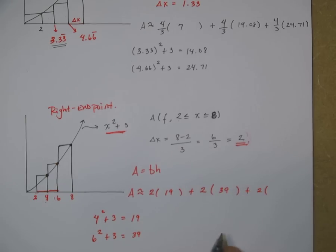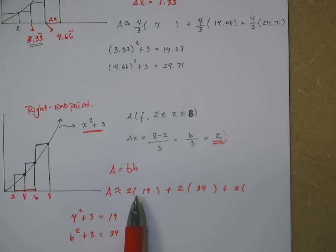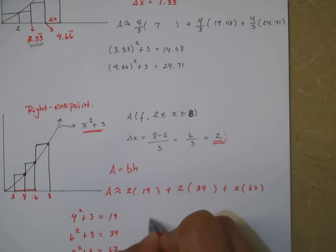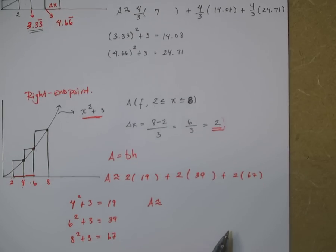And the last one, because they want 3 rectangles so I should have 3 values, 1, 2 and the third one. The last one is 8 and 8 squared is 64 plus 3 is 67. And there it is. And then you can go ahead and do your math, use your calculator and get your square units. So hopefully that helps guys. Let me know if you have any questions.